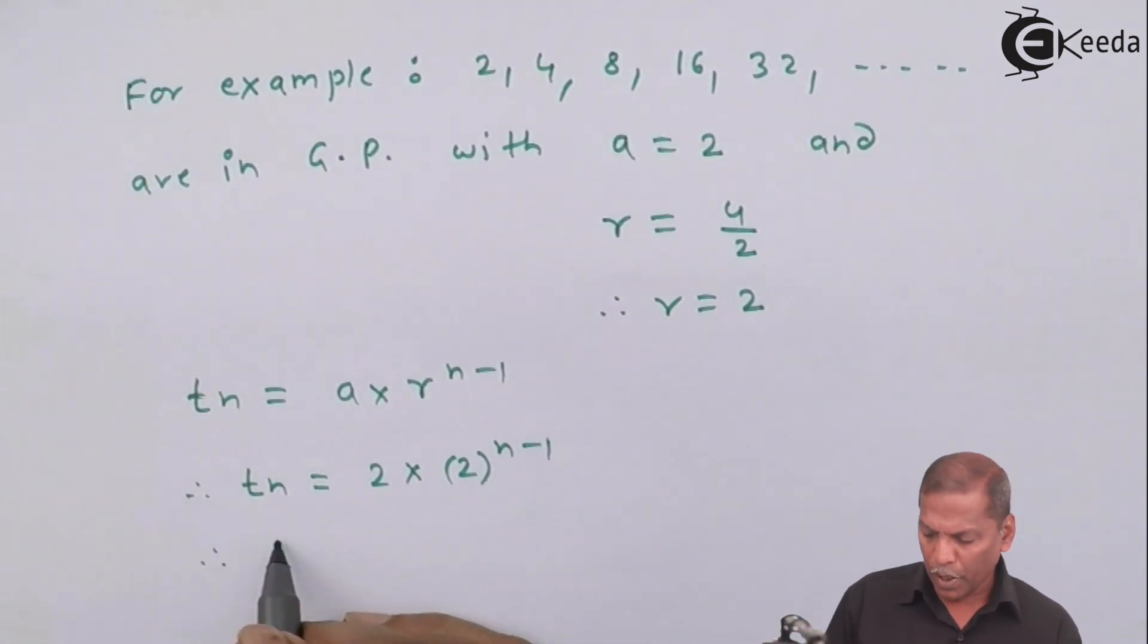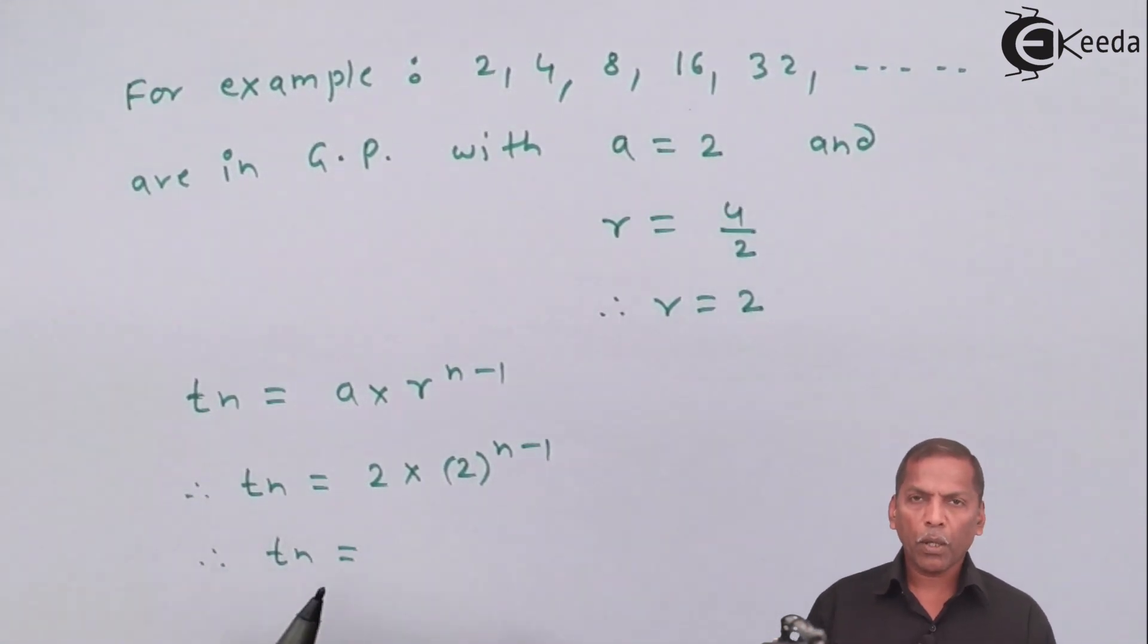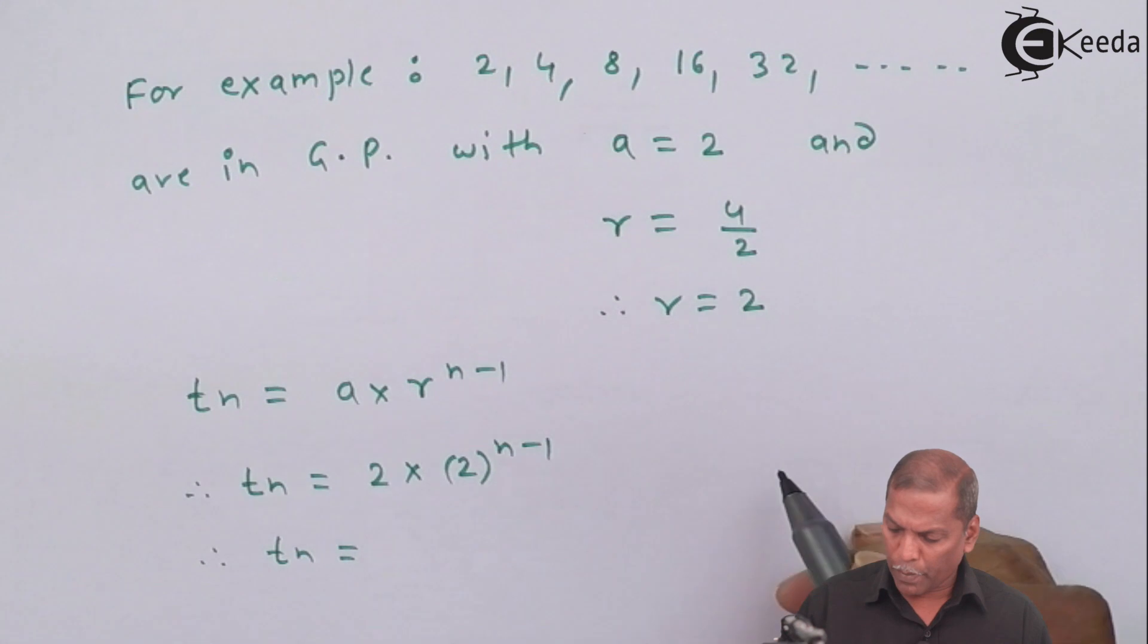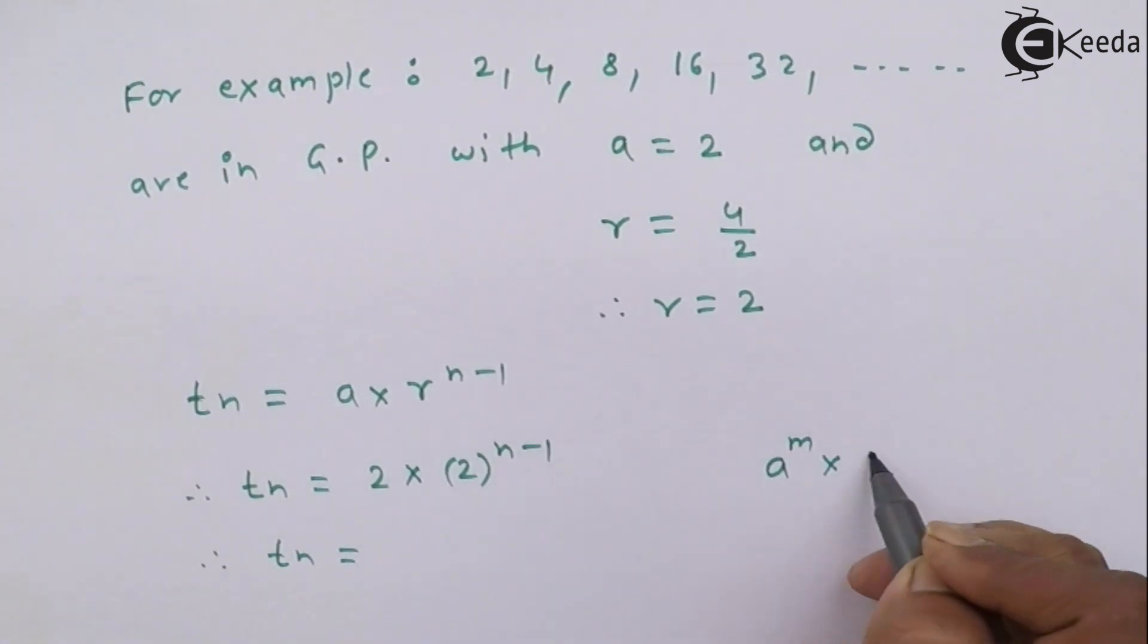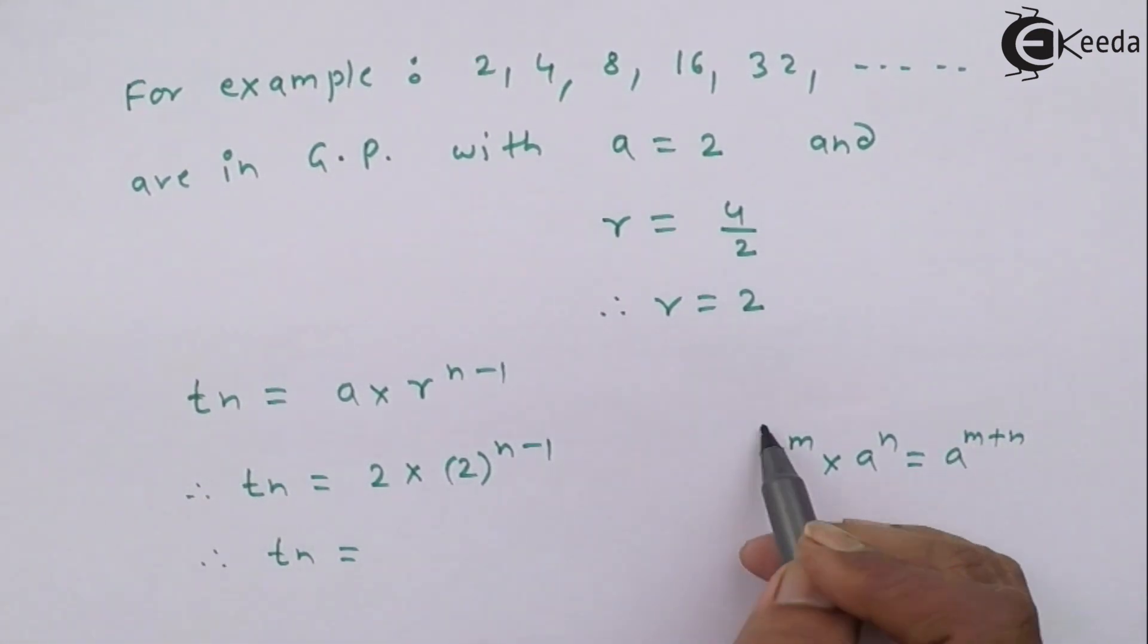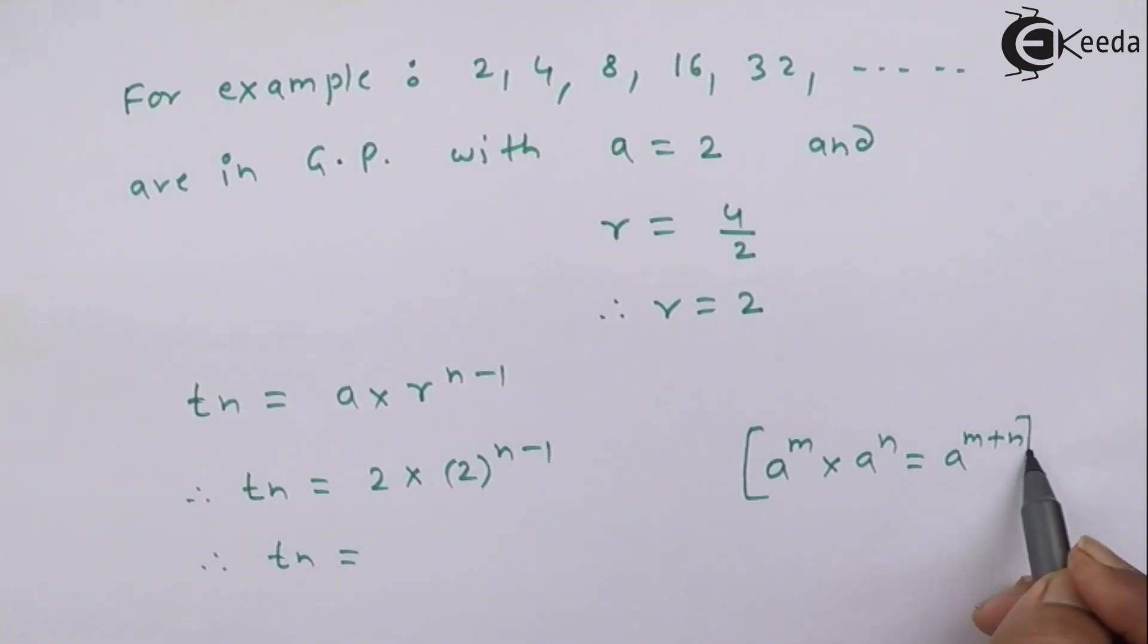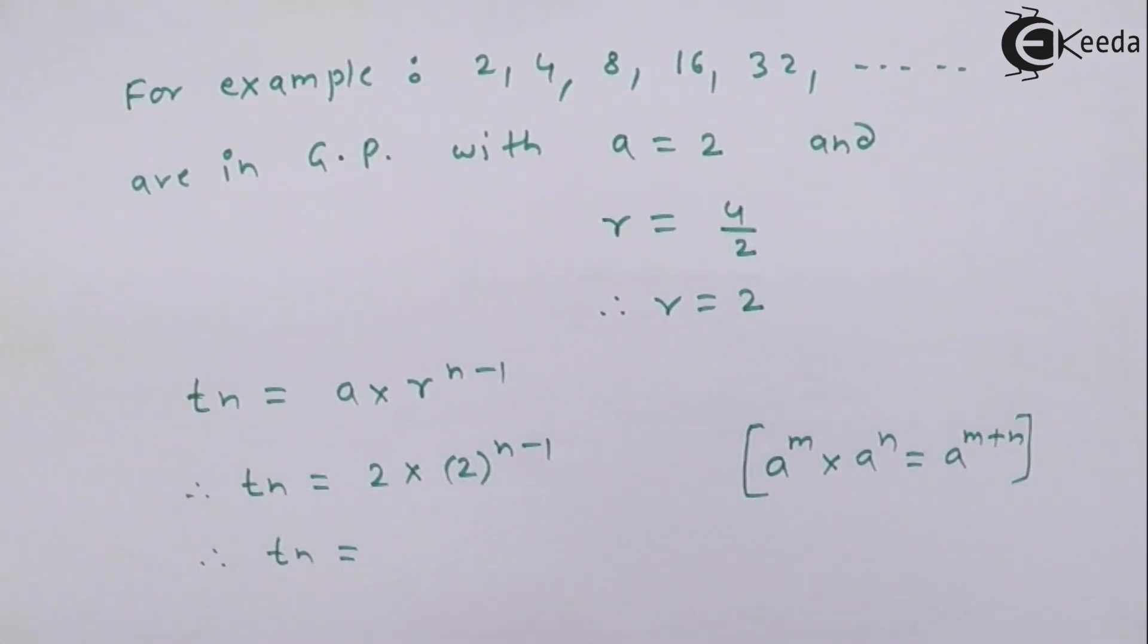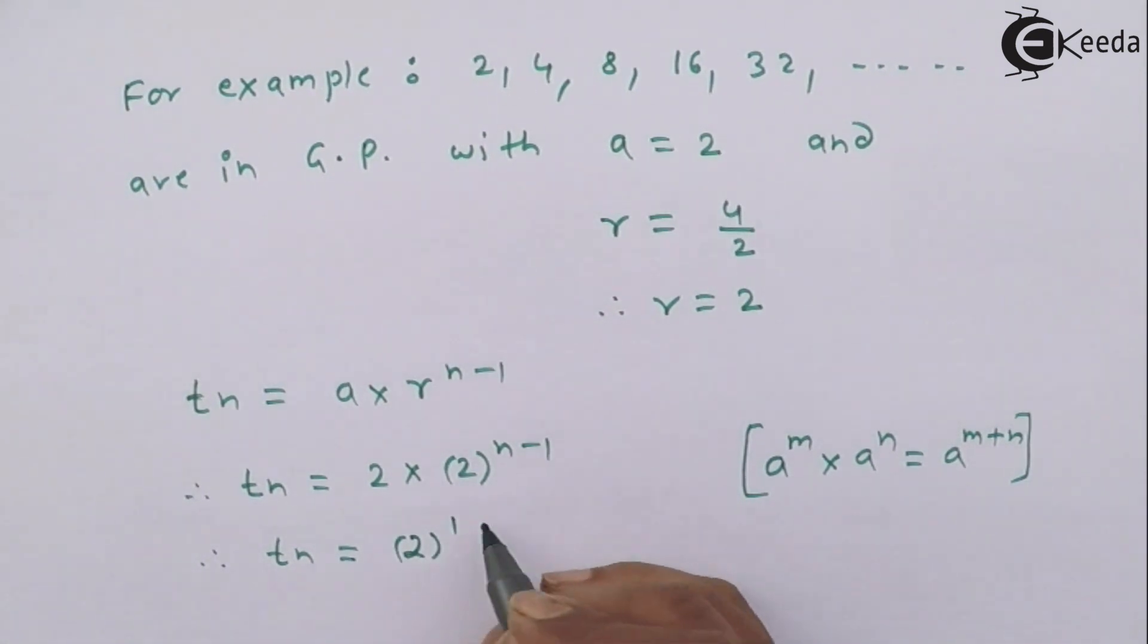That is, Tn equals, now here we use law of indices, that a raise m into a raise n equals a raise m plus n. So here we have 2 raise 1 plus n minus 1.